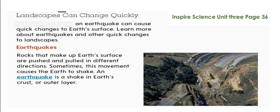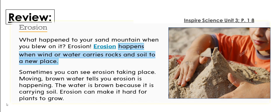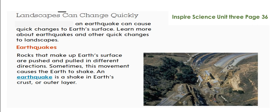Landscapes can also change quickly. Look at the picture on page 36 — an earthquake can cause quick changes to Earth's surface. The two changes we revised — weathering and erosion — are slow changes, but earthquakes are quick changes that happen very fast or suddenly.